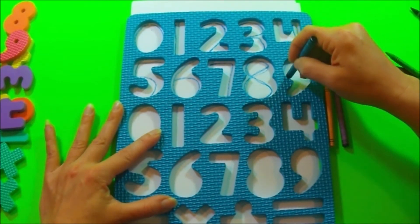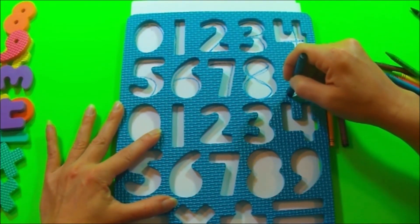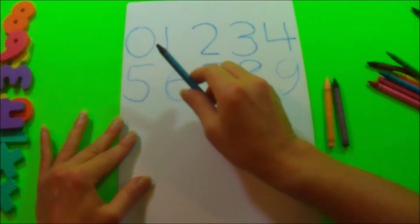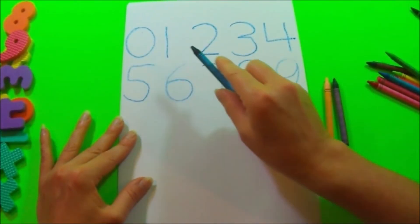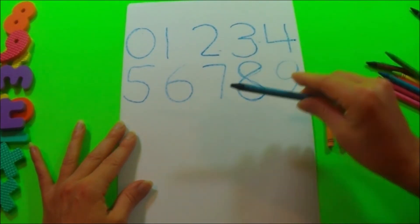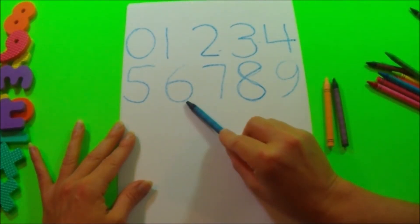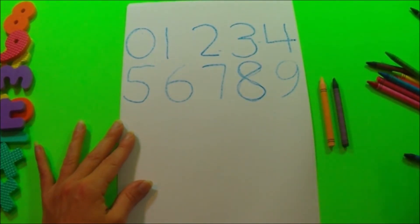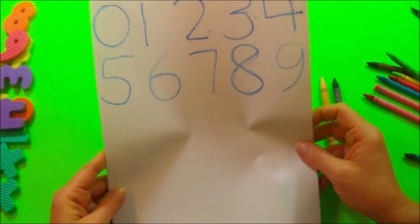Nine. You make a circle and then you go down. So I have zero, one, two, three, four, five, six, seven, eight, nine. Isn't that great?